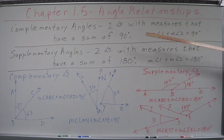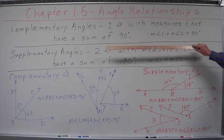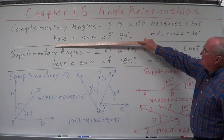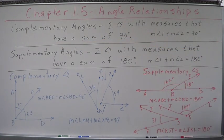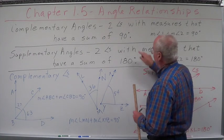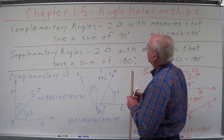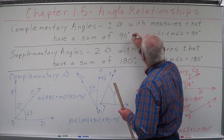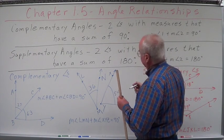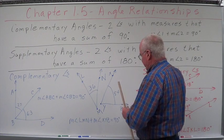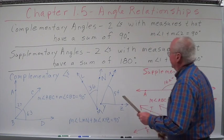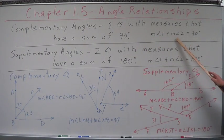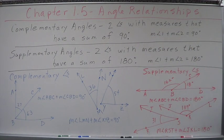Complementary angles: two angles with measures that have a sum of 90 degrees. Two angles with measures that have a sum of 90 degrees. What does that mean? The measure of angle 1 plus the measure of angle 2 equals 90 degrees.